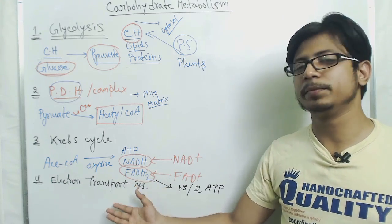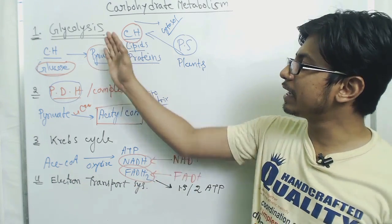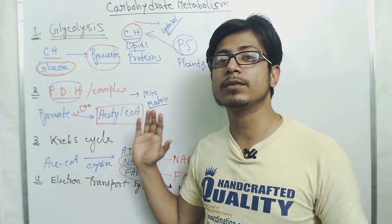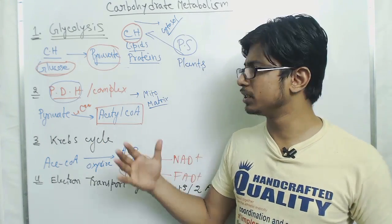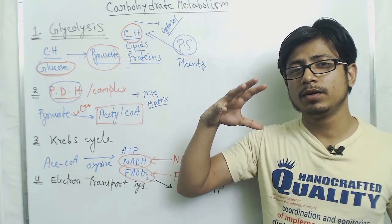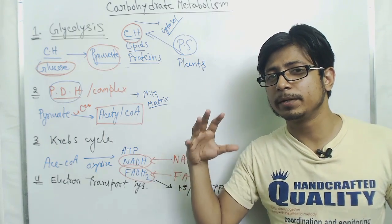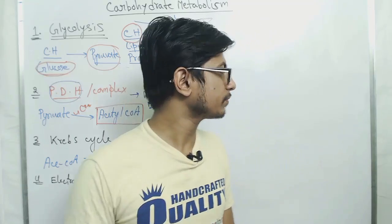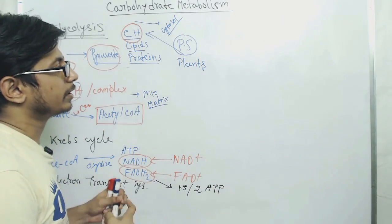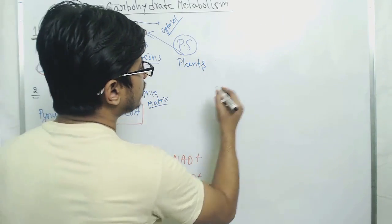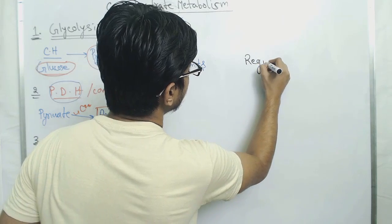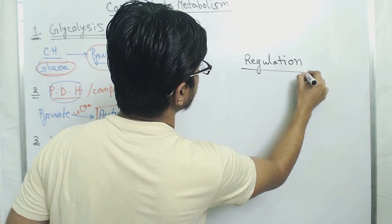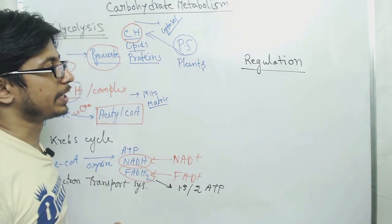The electron transport chain is completely different — the process of inhibition is completely different. But glycolysis and Krebs cycle regulation, in terms of overall metabolic pathways, are very similar. The first thing I want to talk about is the regulation of enzymes involved in the process of glycolysis and Krebs cycle.